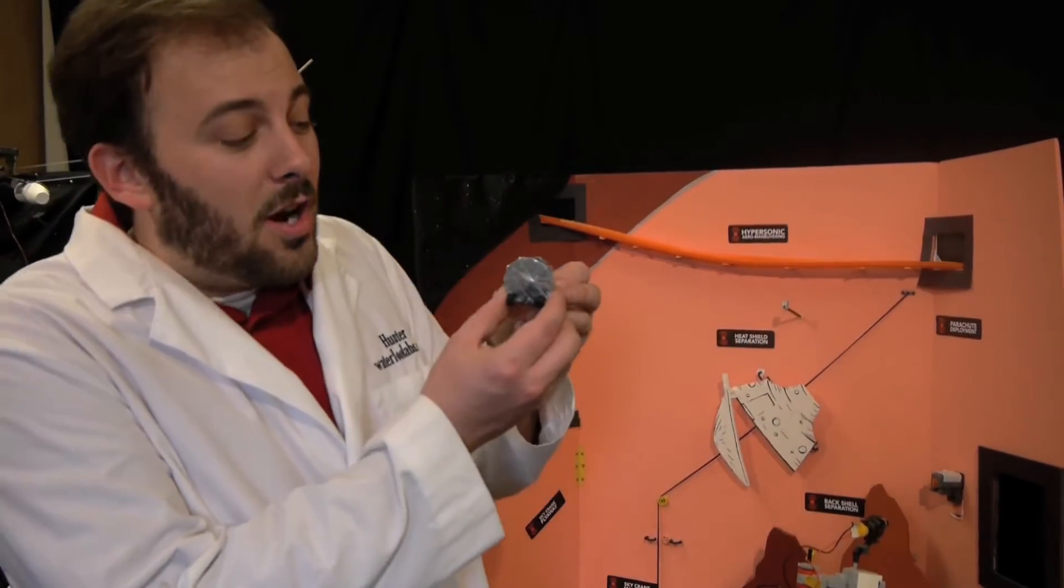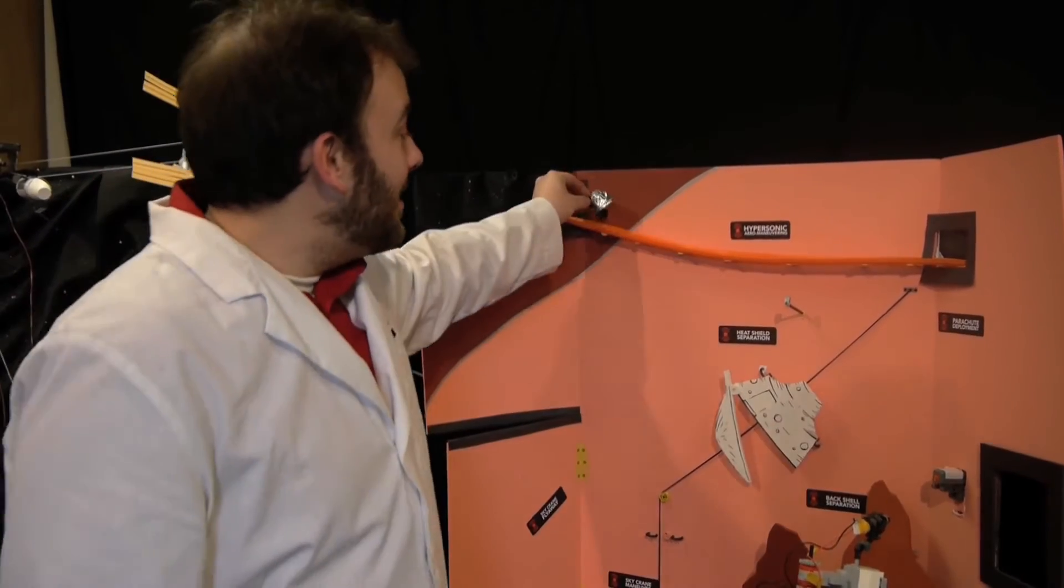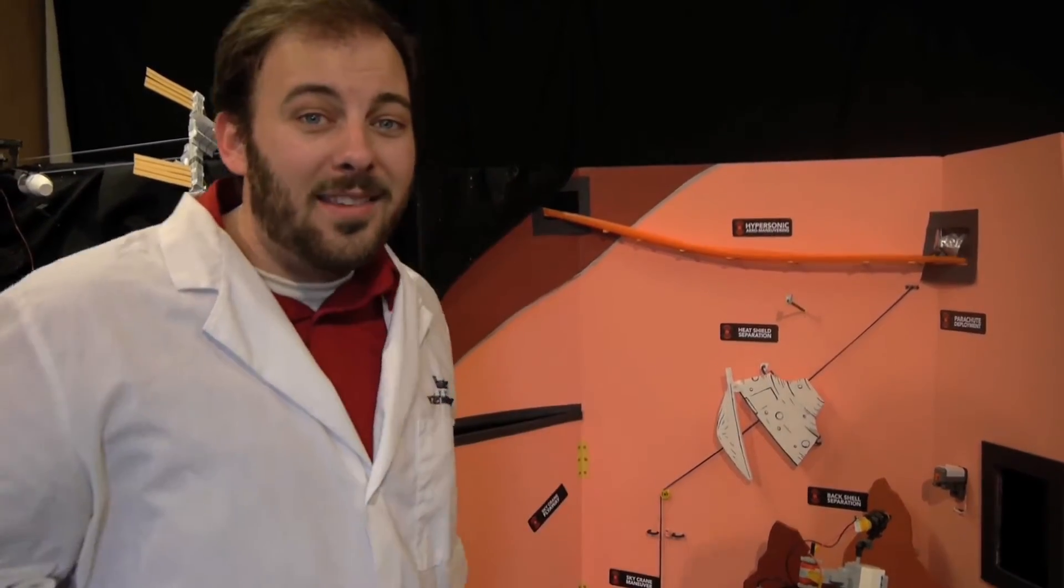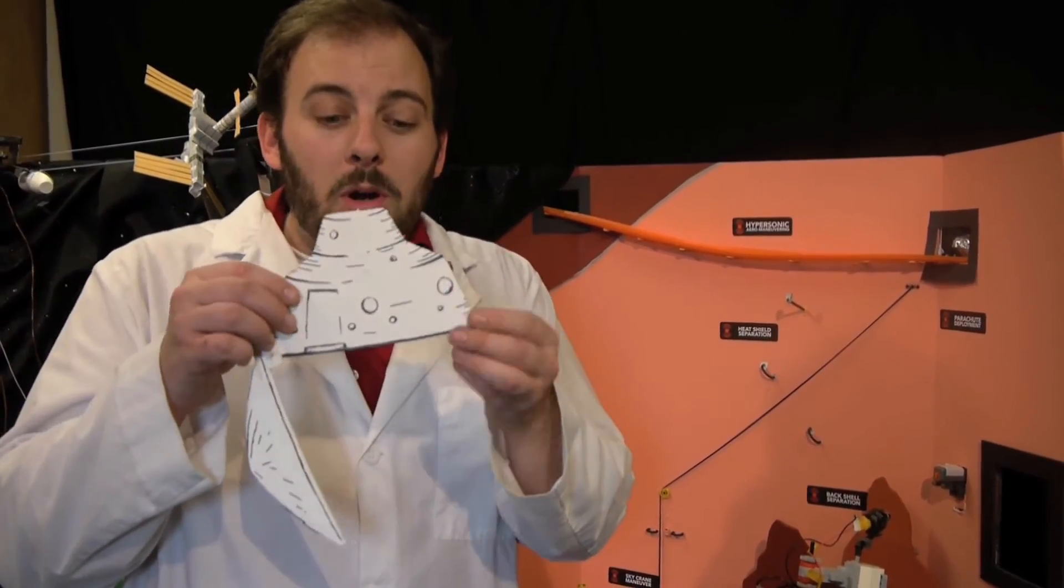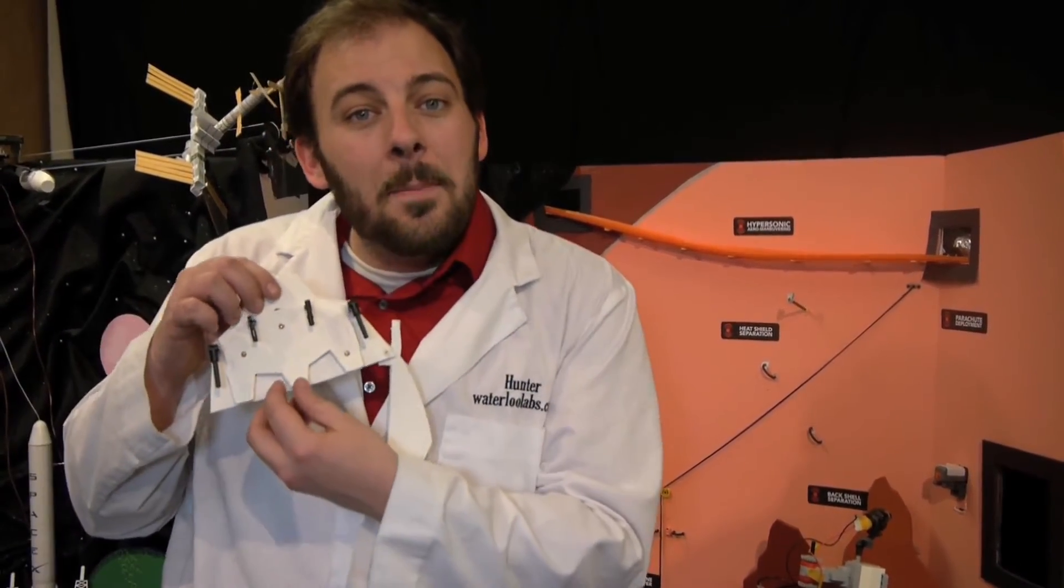Now our version starts with this Hot Wheels version of the Curiosity capsule. It does its hypersonic aeromaneuvering through space, then we show each layer of the separation using these foam core layers attached with neodymium magnets.